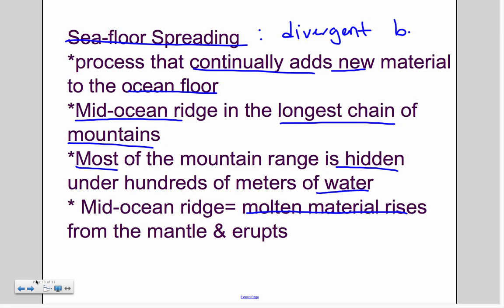Seafloor spreading is our big example of a divergent boundary. This is where the seafloor, the ocean, and the Atlantic Ocean is spreading apart. It's constantly adding new material. It's usually lava because it's magma that rises to the top and cools. And then this ocean spreading has actually caused the mid-ocean ridge, which is the longest chain of mountains. You can actually see them from space. They're huge.